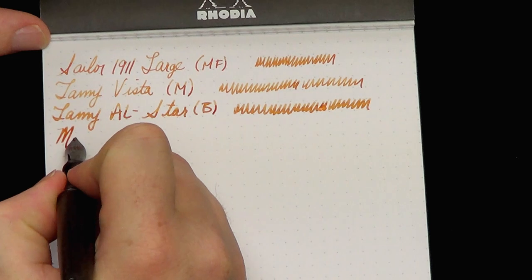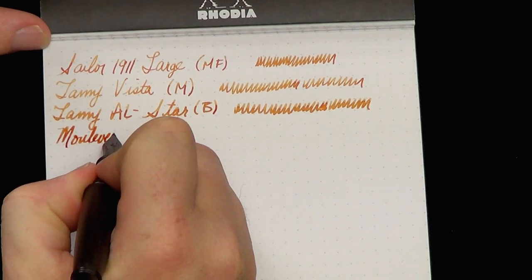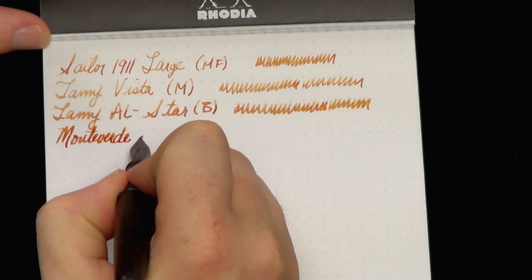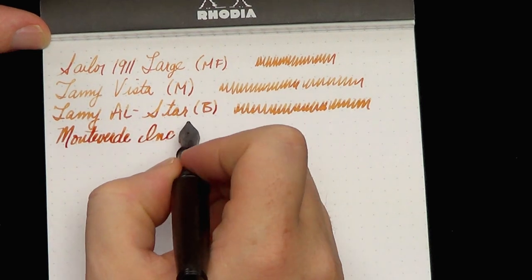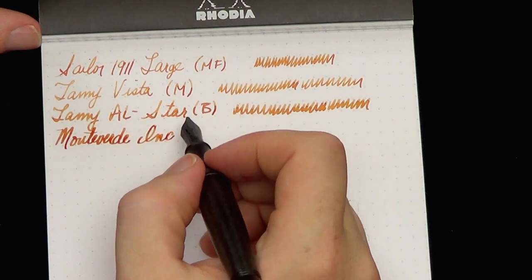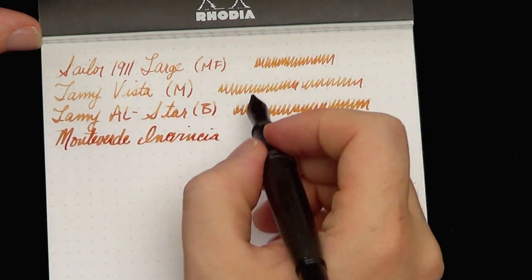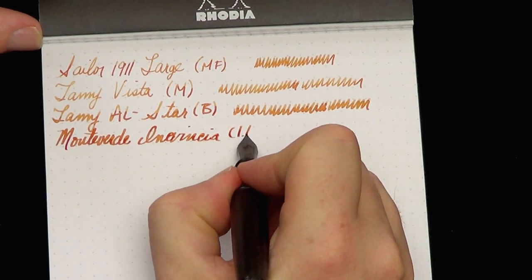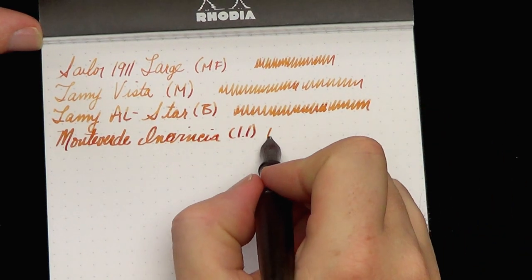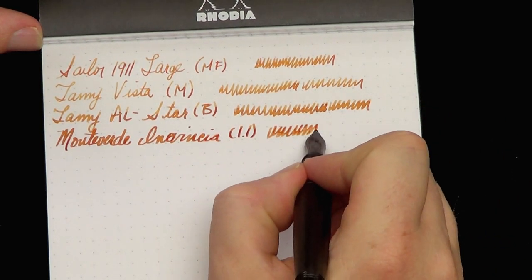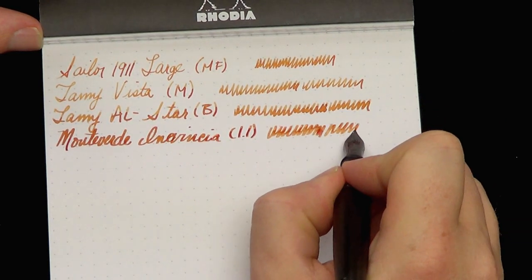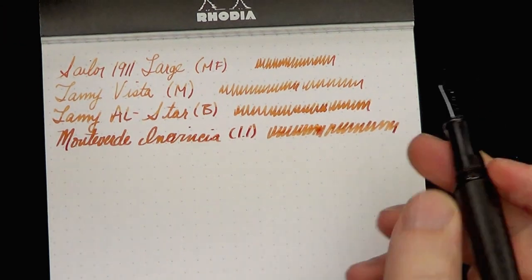This is the Monteverde Invincia Nighthawk Deluxe, blah, blah, blah, blah, blah. It's the old Goulet exclusive that isn't being made anymore. And that's a 1.1 millimeter stub, much wetter pen. So you can see in a super wet pen what you're going to get there.